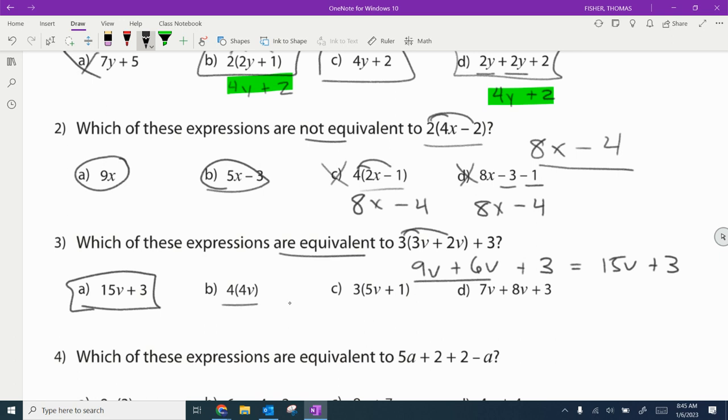This one's not going to work. This is 4 times 4 is 16 with a v. That's not equivalent. 3 times 5v would be 15v. 3 times 1 would be 3. That one's equivalent. This one would be 15v plus 3. So again, equivalent.